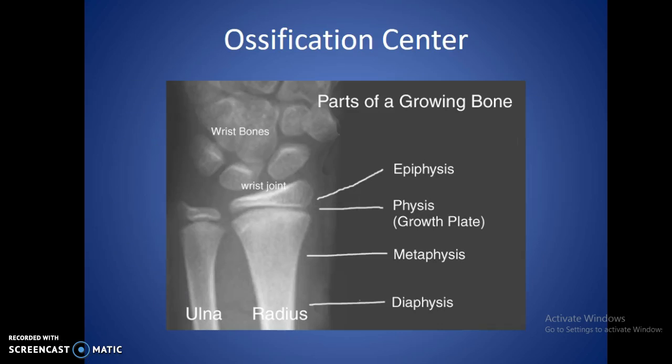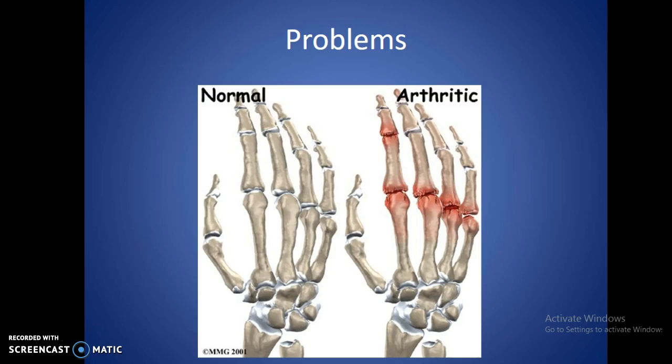This shows part of the growing bone and the different ossification centers. Some problems associated with this include arthritic conditions — basically the joint spaces are losing their elasticity and the bones are hitting against each other instead of having the normal spacing and padding in between.